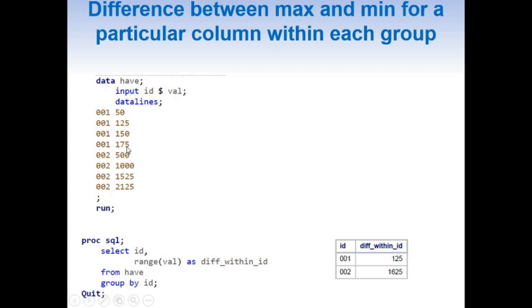We can do this by using the range function, but we need to add the ID column to our SELECT statement and also use GROUP BY ID. This gives us the difference between maximum and minimum for a particular column within each group.